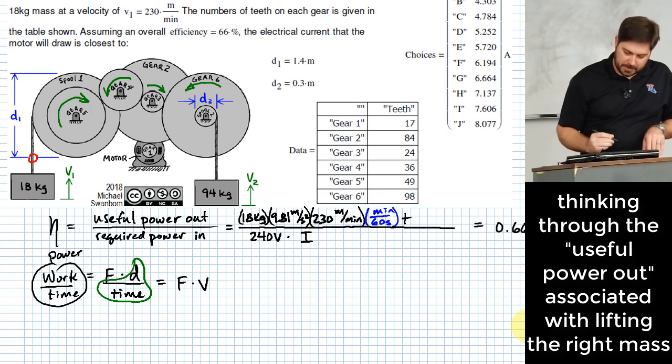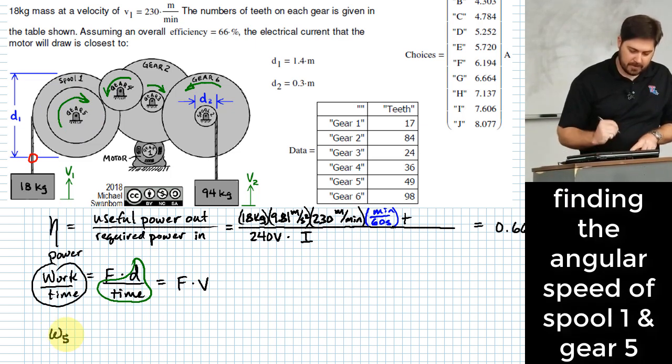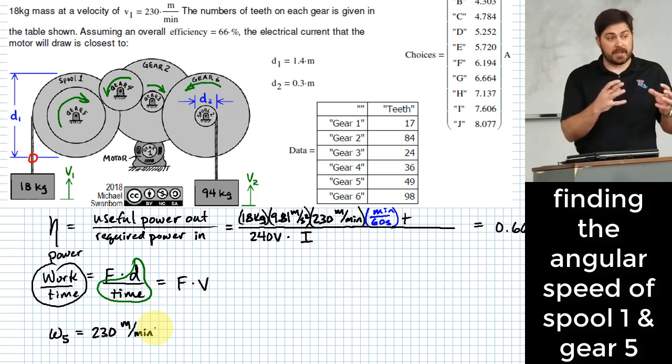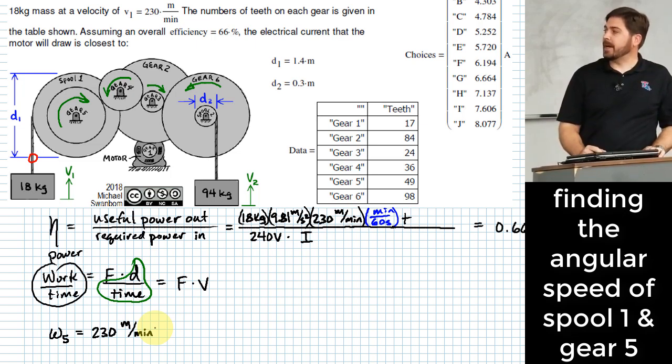Let me do it this way. Let's say spool one is connected to gear five. So let me say omega five. That's how fast that one is turning. How do I figure that out? 230 meters per minute is how fast it's moving linearly. How do I turn that into a rotational speed? So we can kind of think of it in terms of what I'm trying to get it into is an RPM. Revolutions per minute. I need to sort of think of what is my factor that turns my linear into revolutions. What is that factor? Circumference. And how do I find circumference of spool one?